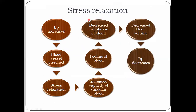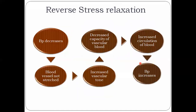The first intermediate-term mechanism is stress relaxation. When blood pressure increases, blood vessels are stretched, causing stress relaxation, which increases the capacity of the vascular bed. The blood in circulation is decreased, reducing blood volume and lowering blood pressure. Reverse stress relaxation is the exact opposite: when blood pressure decreases, blood vessels are not stretched, vascular tone increases, the vascular bed capacity decreases, blood circulation and volume increase, leading to increased blood pressure.